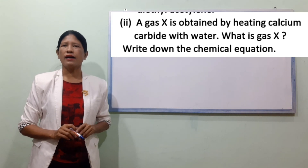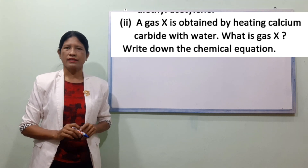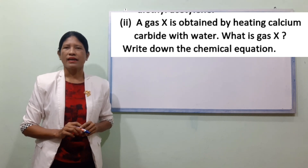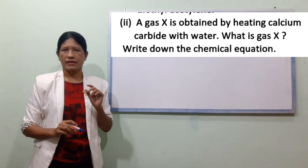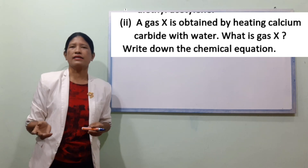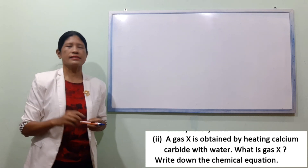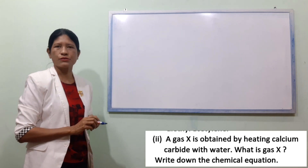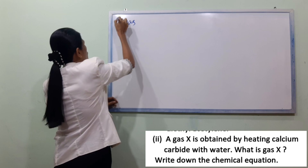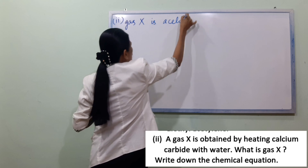Now, see book number two. Gas X is obtained by heating calcium carbide with water. What is gas X? Write the chemical equation. Gas X is acetylene.